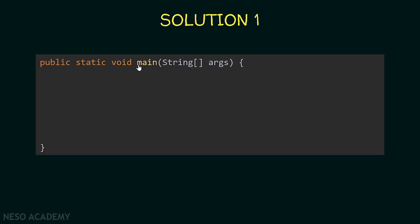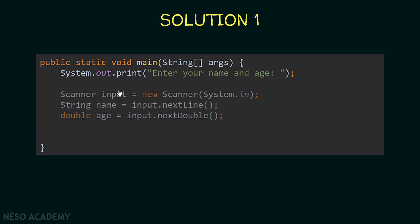Let's see our first solution. In our main method I'm going to display the message 'Enter your name and age.' After this message is printed, I want to read the user's name and age. So first I'm creating my input object, which is an object of the scanner class, and we'll use it to read data from the user. Then I'm reading a string from the user with spaces using the nextLine method, and storing the result in a string called name.